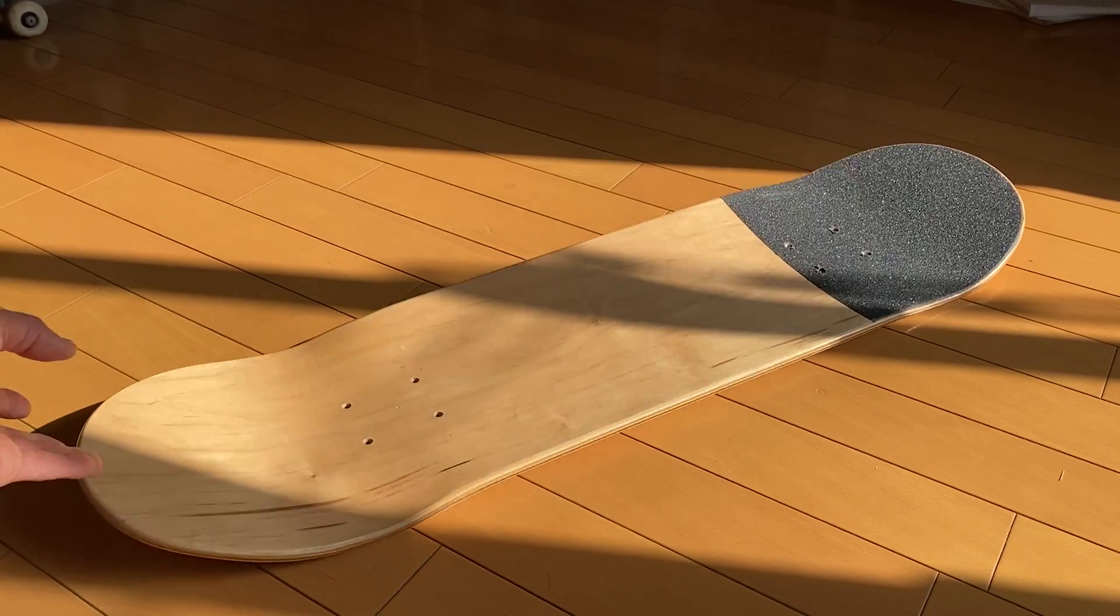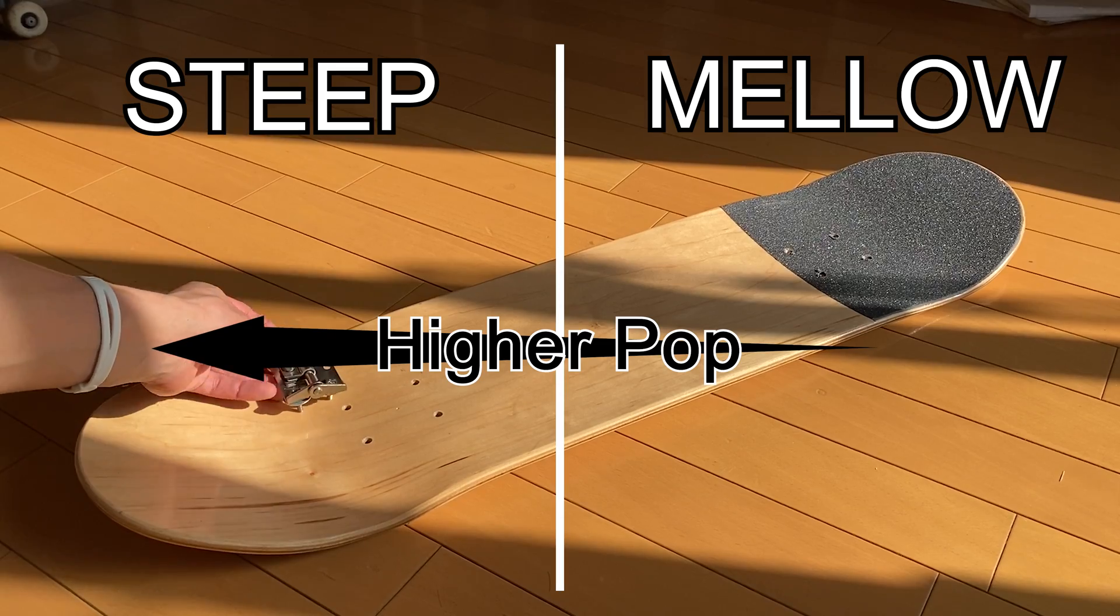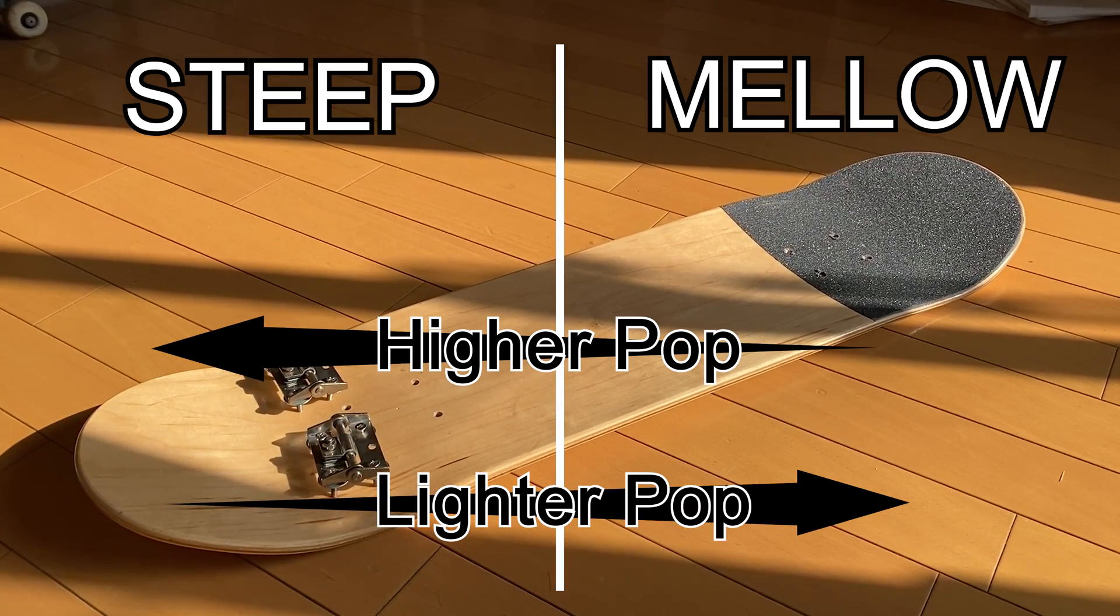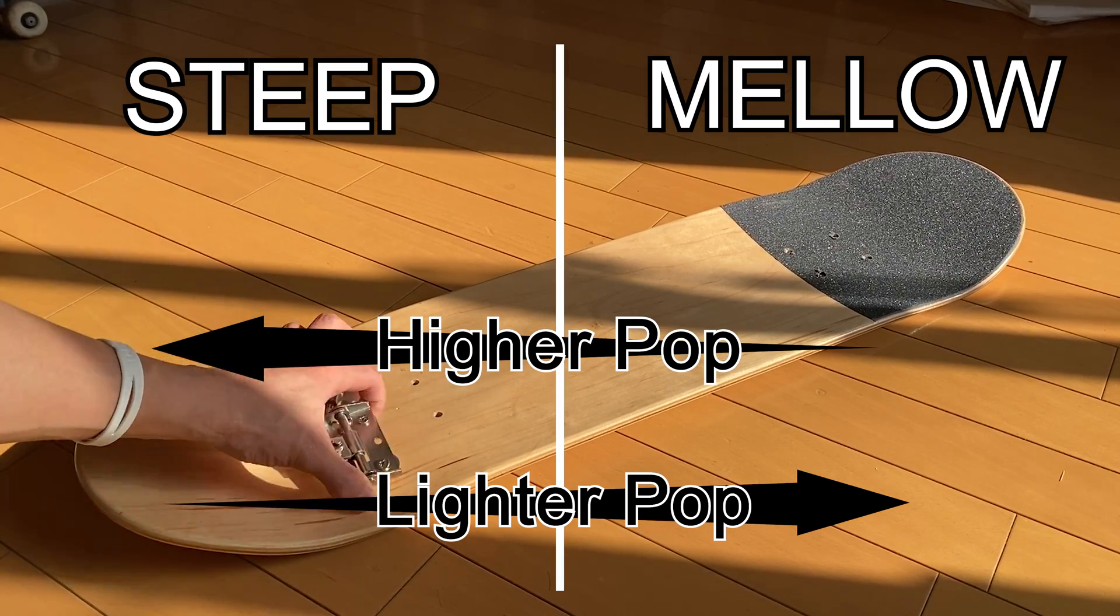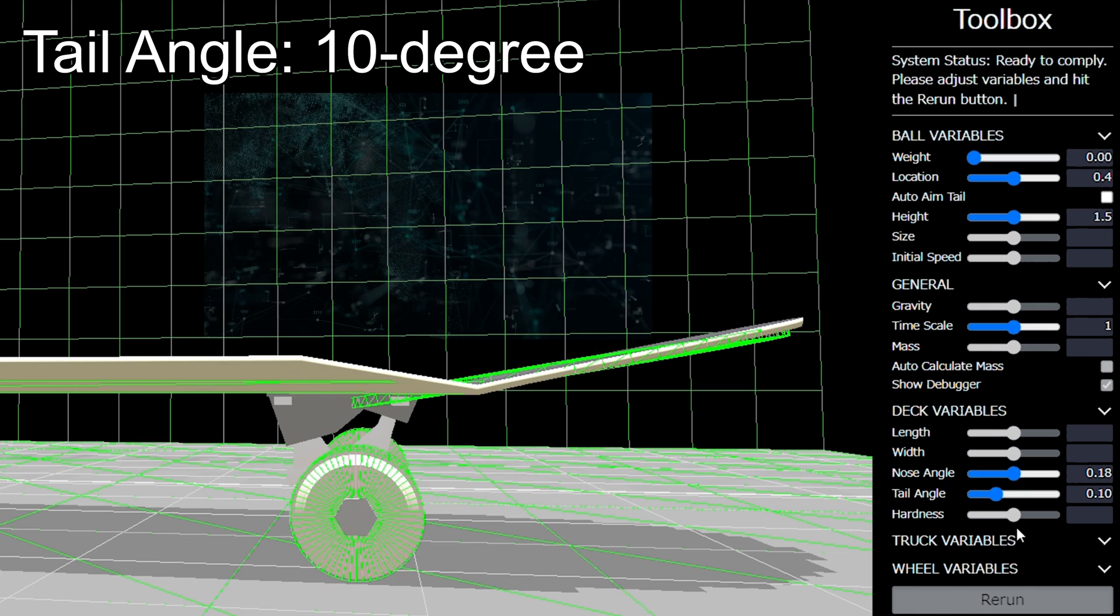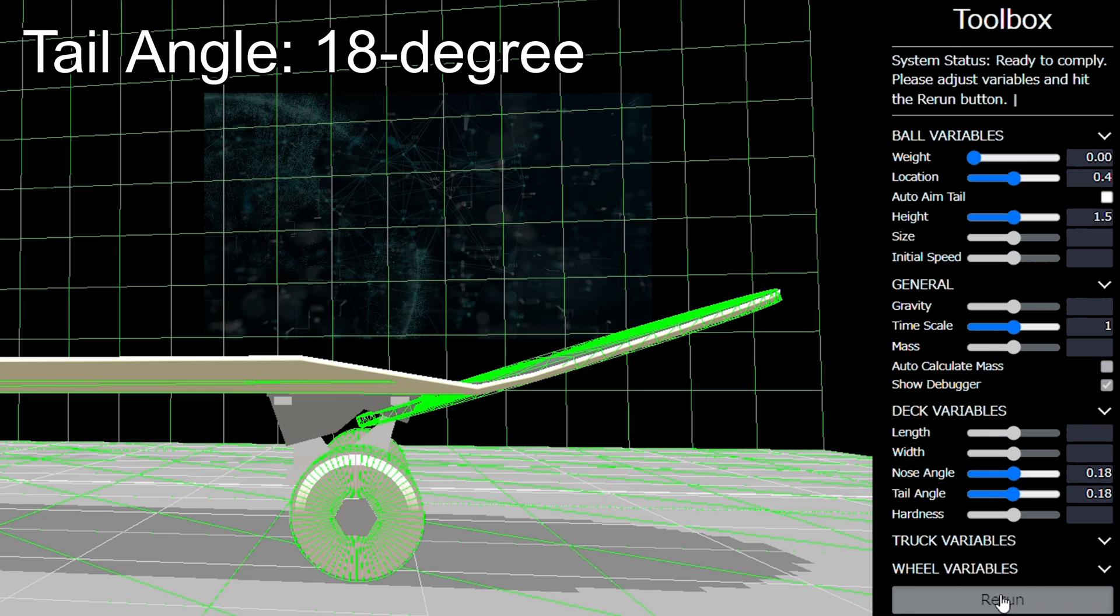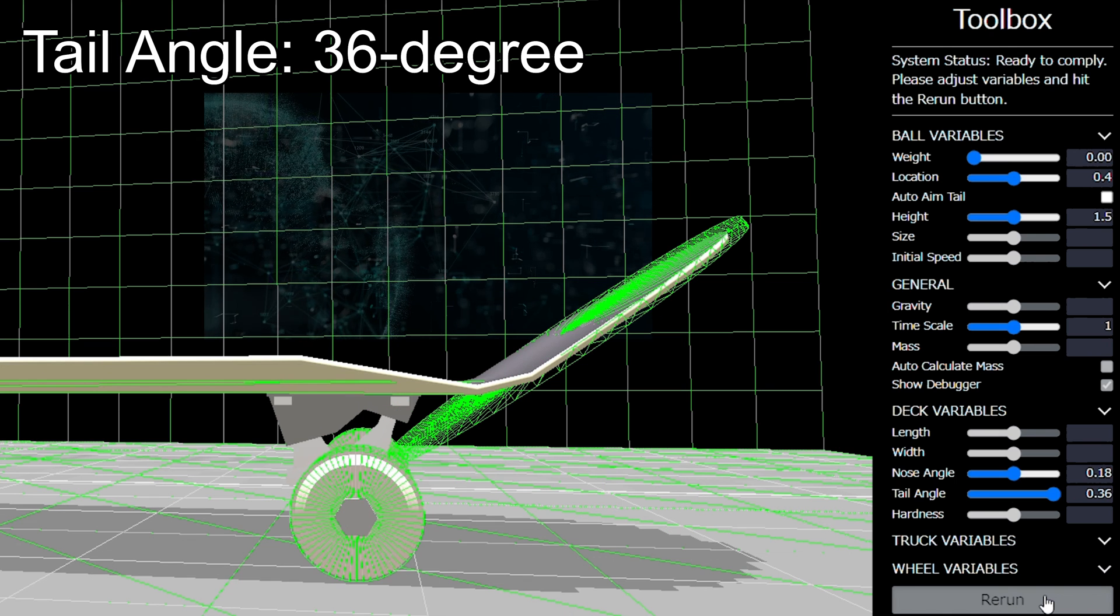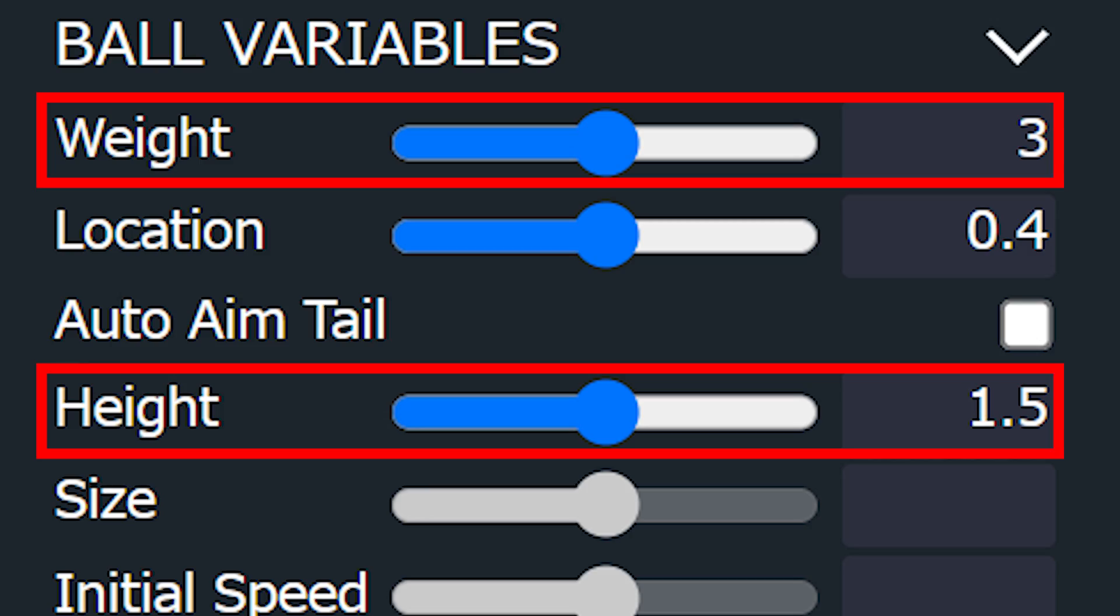It is generally said that steeper the tail angle, the higher it pops, or mellower the tail angle, the lighter it pops. In order to verify whether these common beliefs are true, we will conduct a comparison test using boards with a 10-degree tail angle, an 18-degree tail angle, and a 36-degree tail angle. First, let's drop a 3kg sphere from 1.5 meters high.